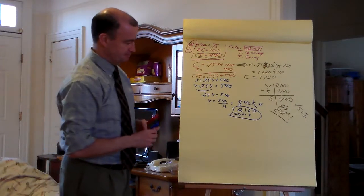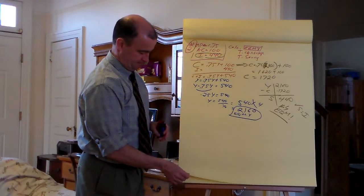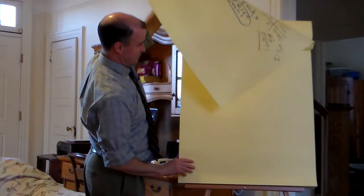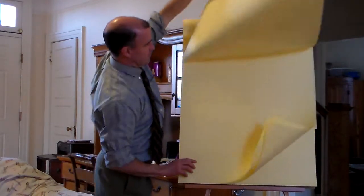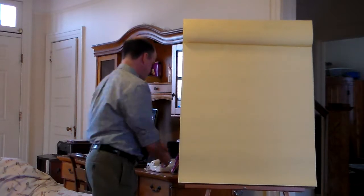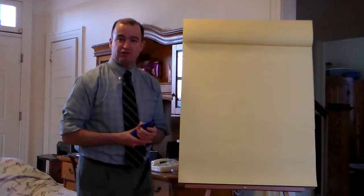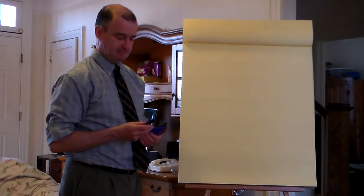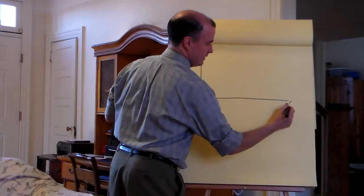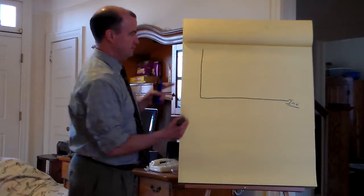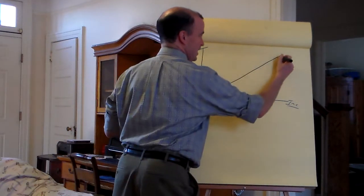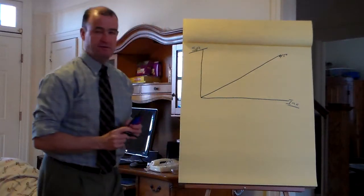Let's draw it. The picture for the problem we just did — number 2, at the end of chapter 10. Income on the horizontal, spending on the vertical, and then every picture gets a 45-degree line.